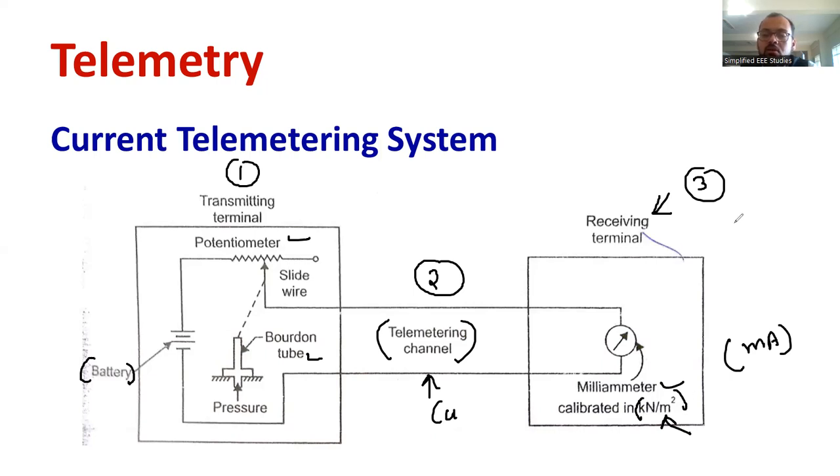For example, 2 milliampere. If I get the reading of 2 milliampere, we can say there is a definite amount of pressure. Suppose if I get 100 milliampere, that means pressure is very high. It is already calibrated. So these are the major components of the current telemetry system.